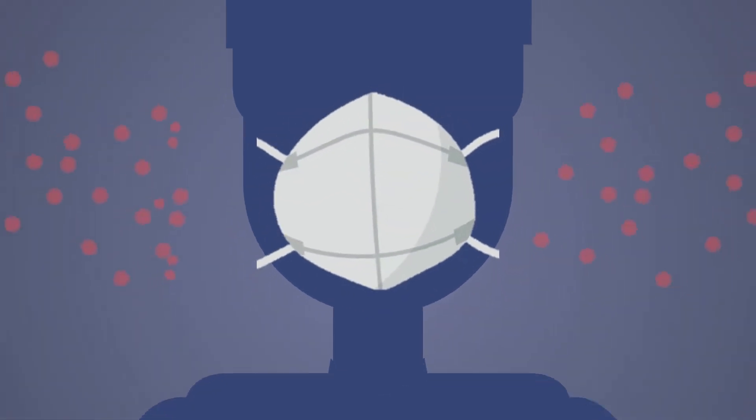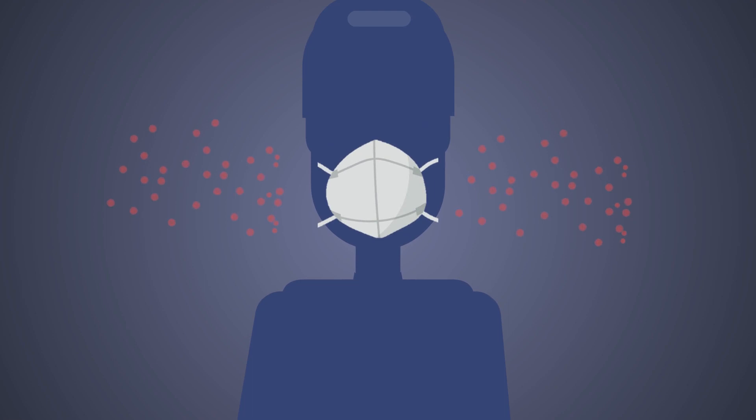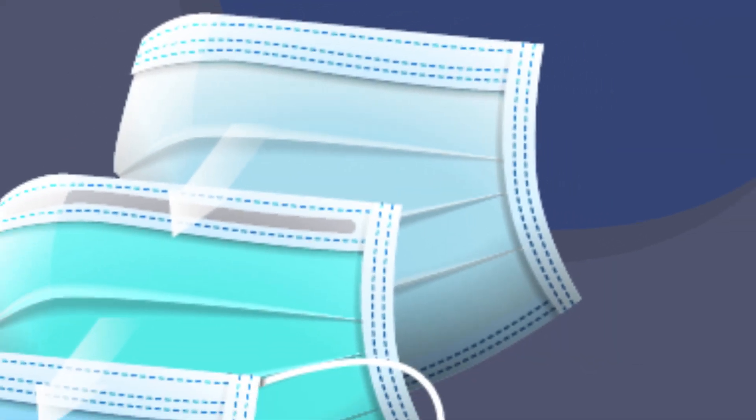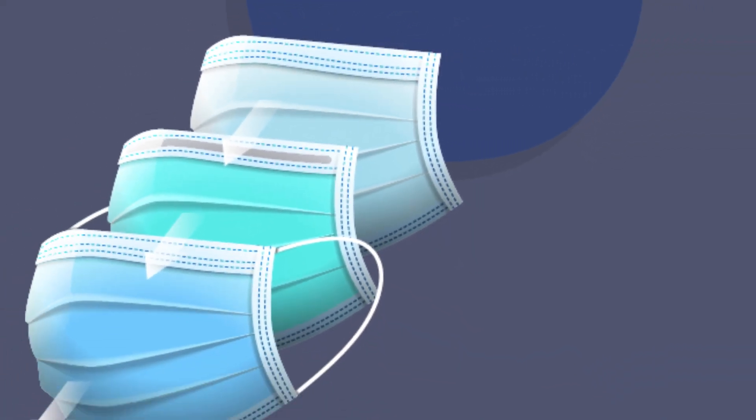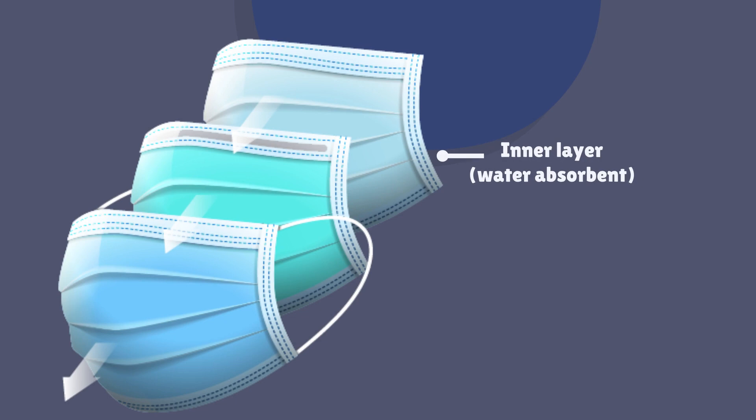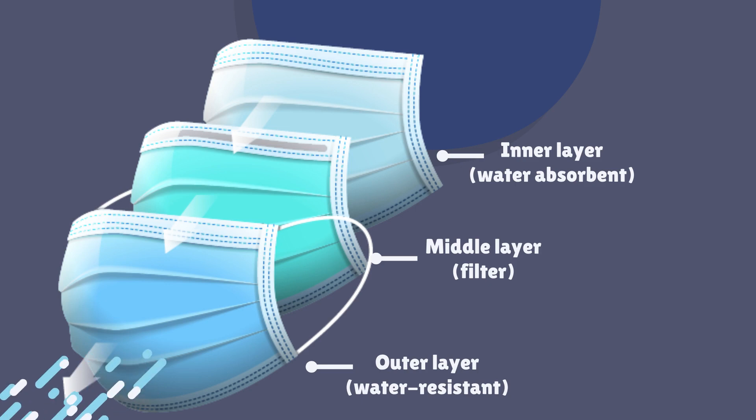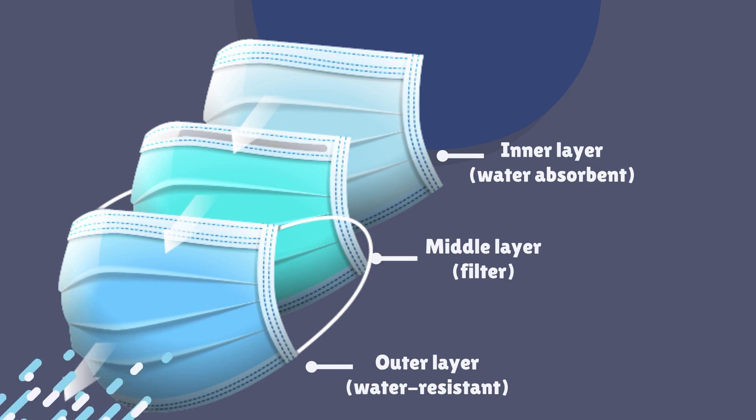In contrast, a surgical mask works in three layers, an inner water-absorbent layer that catches any dispersions, a middle layer that acts as a filter, and an outer layer which is generally a water-resistant fabric and prevents large droplets from attaching to its surface. The way the filters are weaved together in these masks make the motion part through them very difficult for these particles.